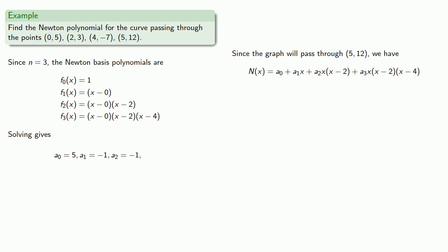And in our last point, if x is equal to 5, then N(x) is equal to 12. And that gives us an equation, which we can then solve for a3. And so we have the coefficients of our polynomial, which in this case turns out to be a cubic.